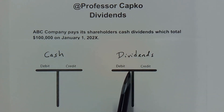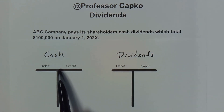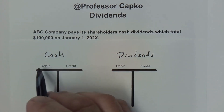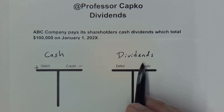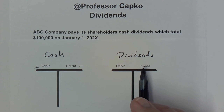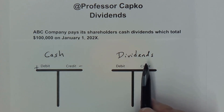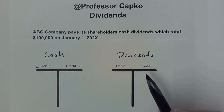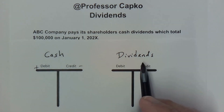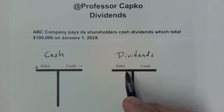Now, let's talk about cash first. Cash is an asset, and therefore it increases with debits and decreases with credits. Dividends are really a type of contra owner's equity account because it reduces the retained earnings. The company has profits — those profits would be part of the retained earnings — and then dividends pay out of those retained earnings. Again, it's not an expense; it reduces retained earnings, which ultimately reduces owner's equity.